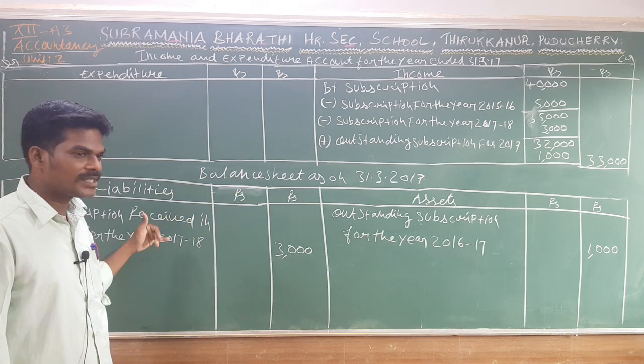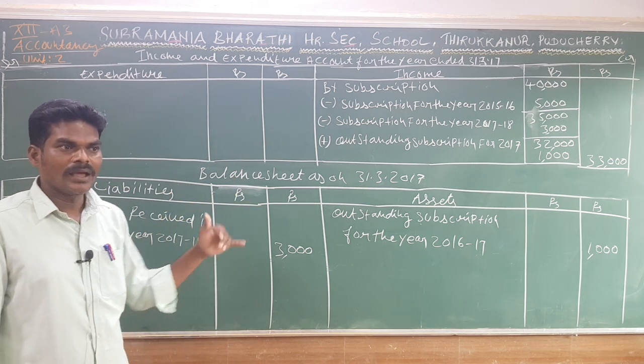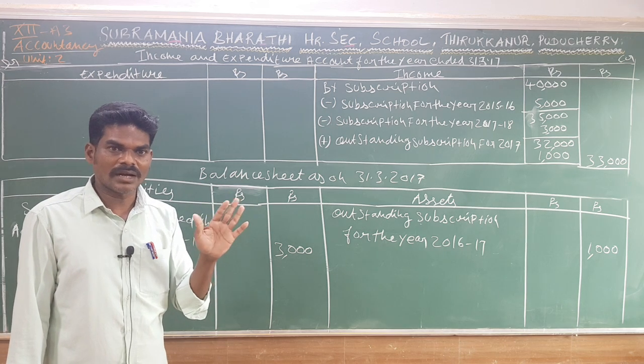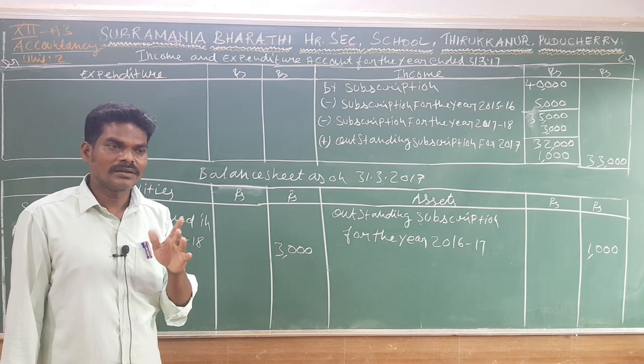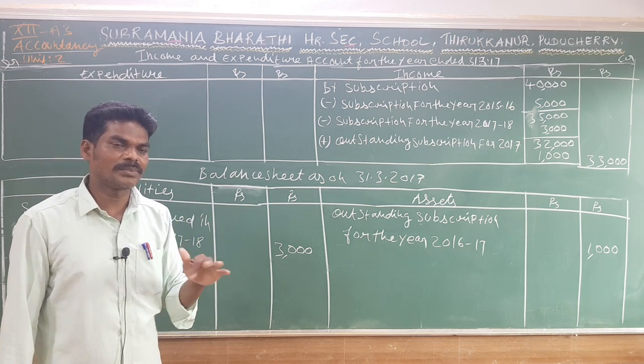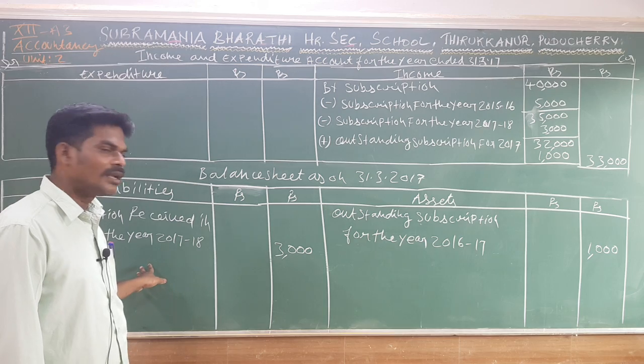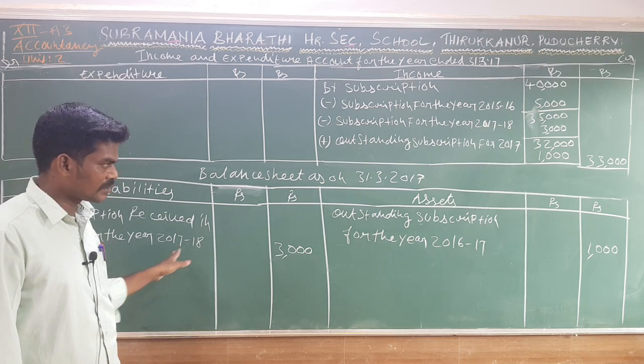So in the balance sheet on the liability side, we show the subscription received in advance for the subsequent period — ₹3,000 for 2017-18.